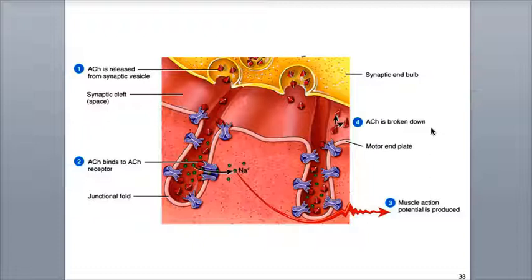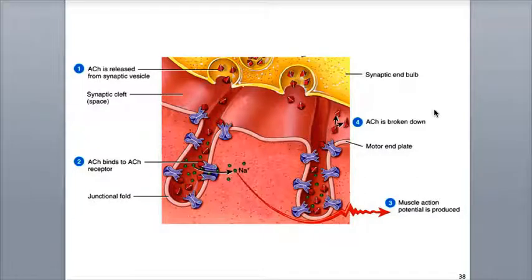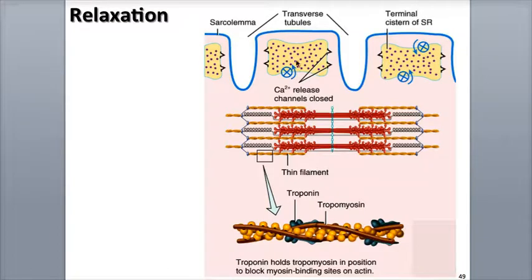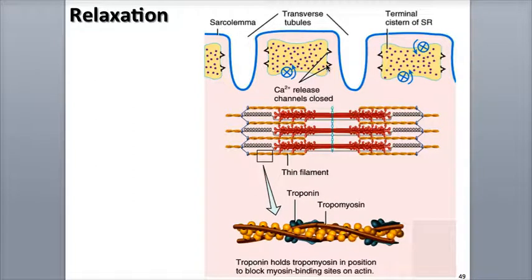When there are no more action potentials in the motor neuron, acetylcholine release stops and acetylcholinesterase quickly breaks down whatever acetylcholine is left within the synaptic cleft. The calcium ions are pumped back into the sarcoplasmic reticulum and the calcium ion release channels within the SR membrane close.